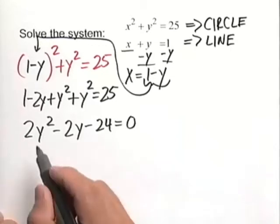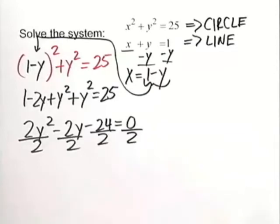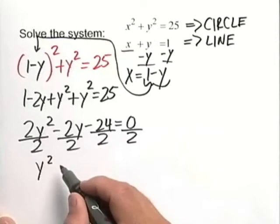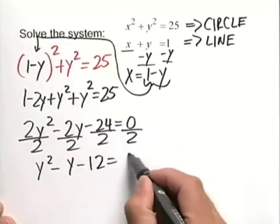Now note that we have a common factor of 2 throughout. So I'm just going to go ahead and divide the left and the right-hand side by 2 to make our quadratic equation a little bit nicer. We have y squared minus y minus 12 equaling 0.